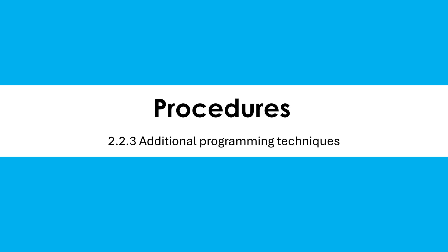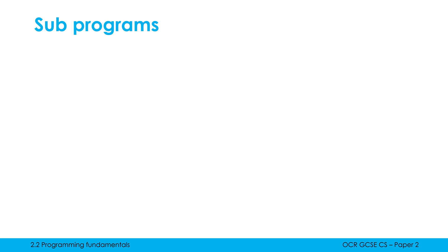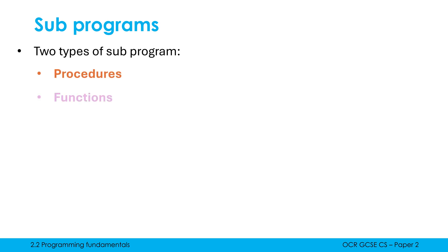Having defined subprograms in the last video and looked at some key terms like calling and definition, let's now look at procedures in a bit more detail and how we answer questions related to these. We'll look at parameters which apply to both procedures and functions, because subprogram is our overriding term. At GCSE we have two types of subprogram: procedures and functions.